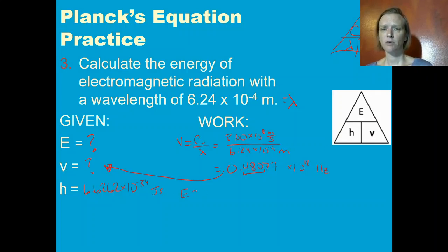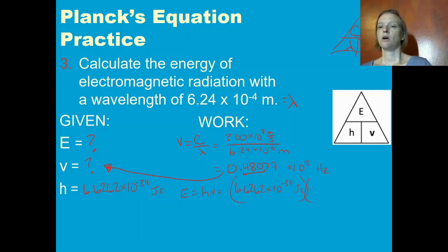E equals Planck's constant times frequency: 6.6262 times 10 to the negative 34 joule seconds times 0.48077 times 10 to the 12th hertz, which is 1 over seconds.